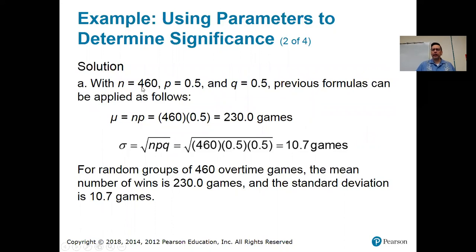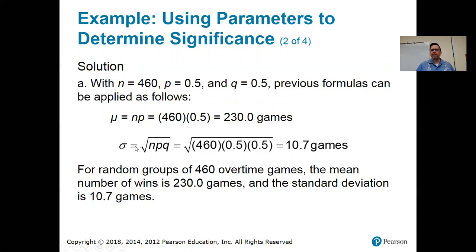Plugging in N equals 460 and P equals 0.5: mu equals N times P, which is 460 times 0.5 — that's 230 games. The average number of games won would be 230, which makes sense: half of 460. The standard deviation is the square root of N times P times Q — the square root of 460 times 0.5 times 0.5 — which is about 10.7 games.